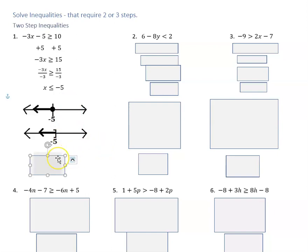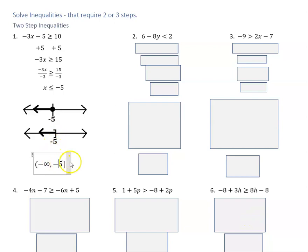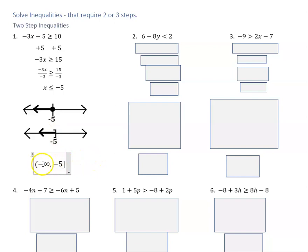How does that look as interval notation? We're seeing everything that makes this true starting with negative five and going to the left — all the way to negative infinity. So we're going from negative infinity up to and stopping at negative five. When we have infinity, whether negative or positive, we always use a parenthesis. But our sign with our number always matches what it was on the graph — an equal-to part has a bracket on the graph, so it has a bracket in interval notation as well.